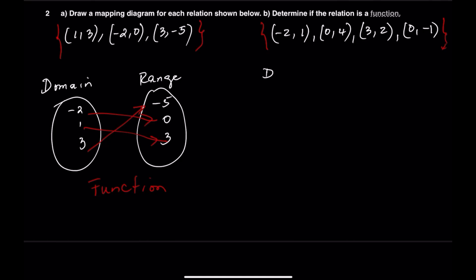Now let's move to the second relation. We're going to use a mapping diagram again. For the domain, we have negative 2, 0, and 3. For the range, we have negative 1, 1, 2, and 4.